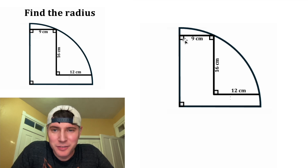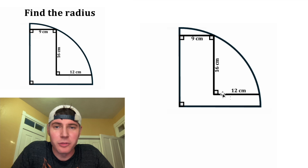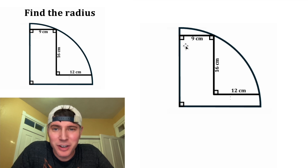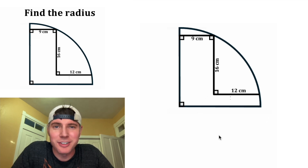Hey guys, this looks like a fun one. It gives us that this is 9, this is 16, and this is 12, and they're all at right angles with each other. And it wants us to find the radius of this quarter circle.